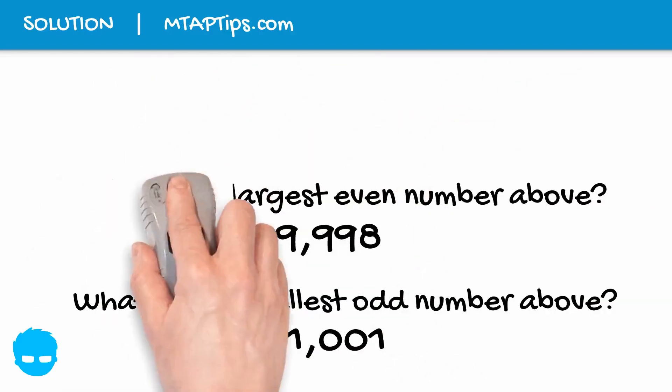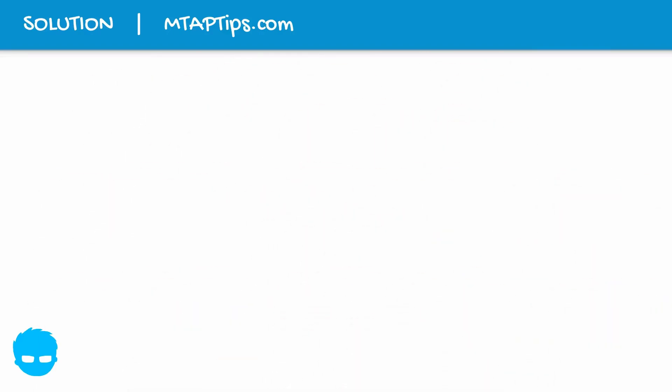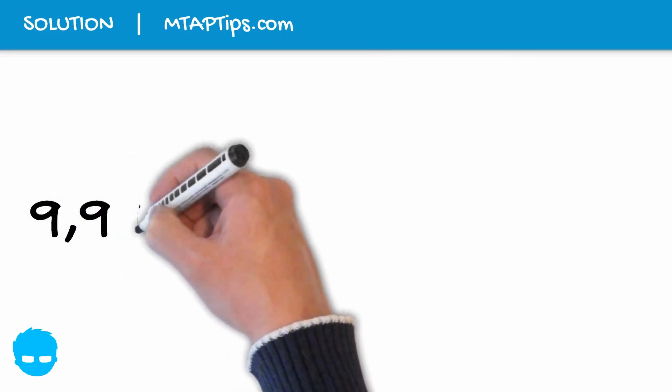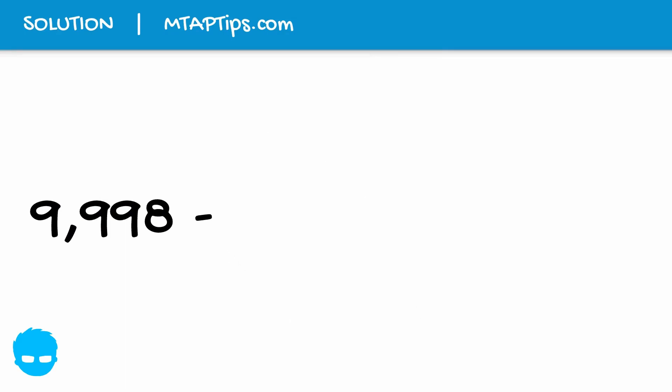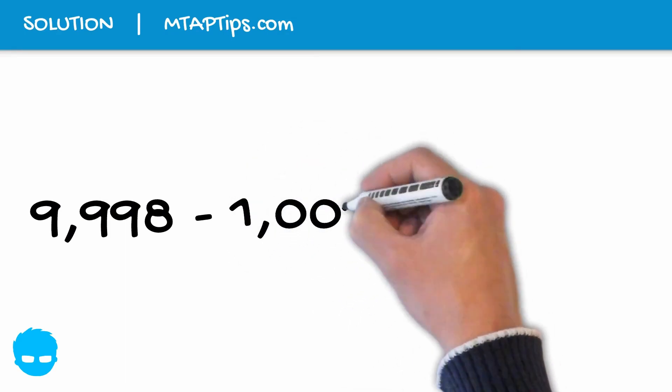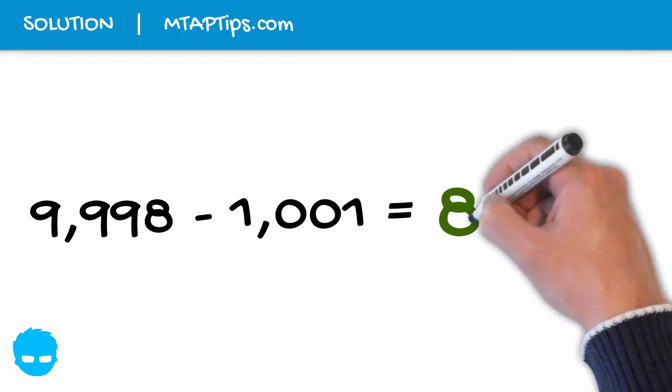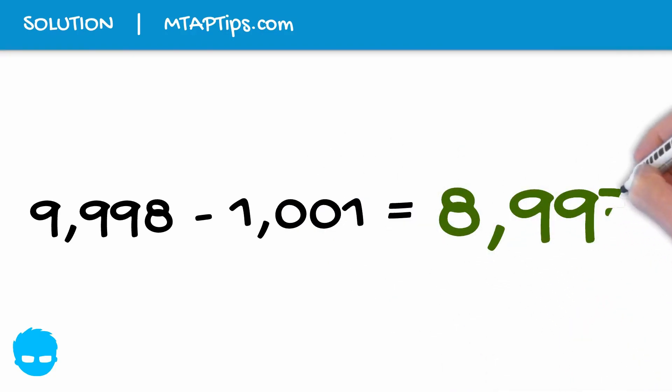So now we know the largest 4-digit even number, which is 9,998. And when we subtract the smallest odd 4-digit number, which is 1,001, we'll have 8,997. So the answer is 8,997.